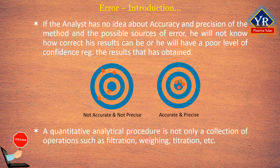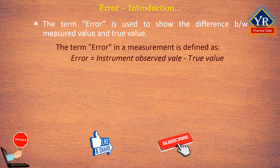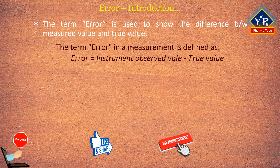A quantitative analytical procedure is not only a collection of operations such as filtration, weighing, titration, etc. The analyst must know the theoretical principles on which the method is based, the possibility of interference due to presence of other substances, and the possible sources of error. The term error shows the difference between measured and true value. Even an expert analyst working with best-quality apparatus cannot completely eliminate error; however, attempts are made to minimize it.